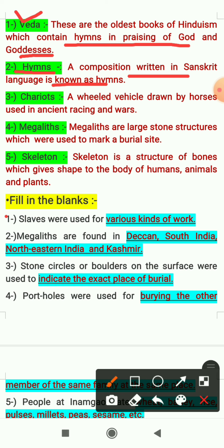The third keyword is chariots. Chariots are a wheeled vehicle drawn by horses, used in ancient racing and wars.